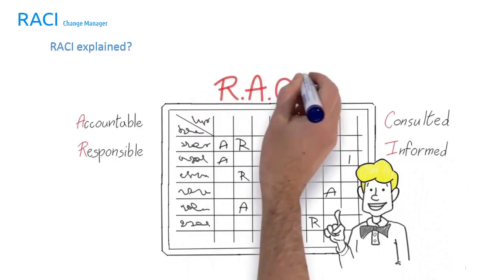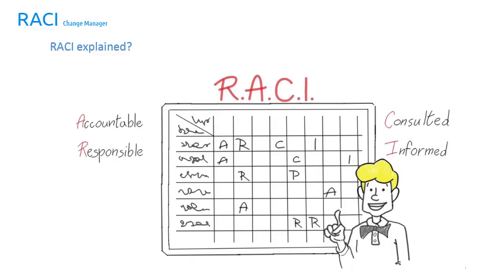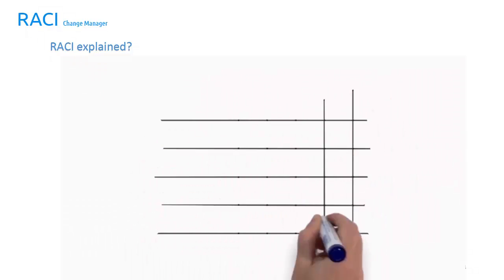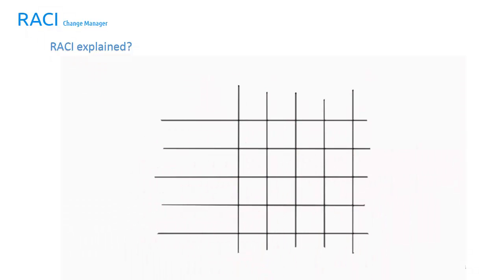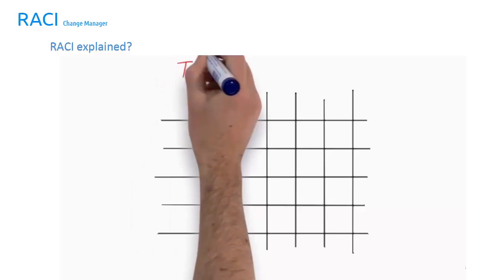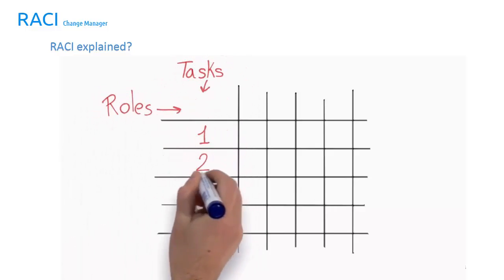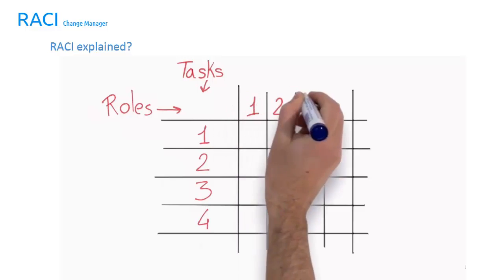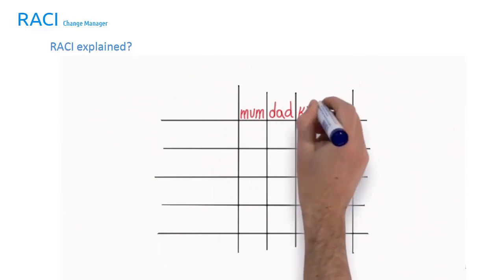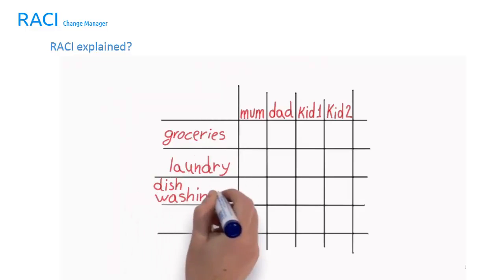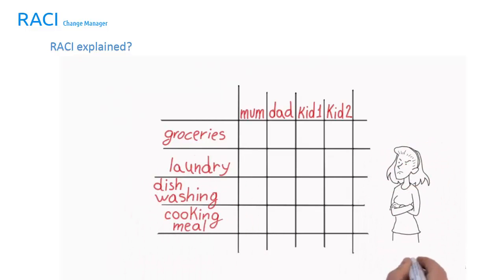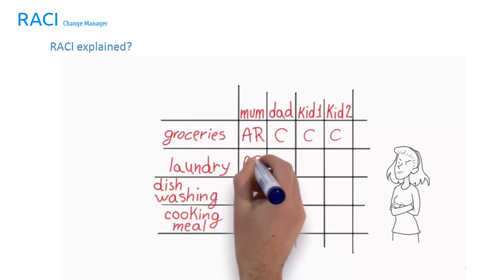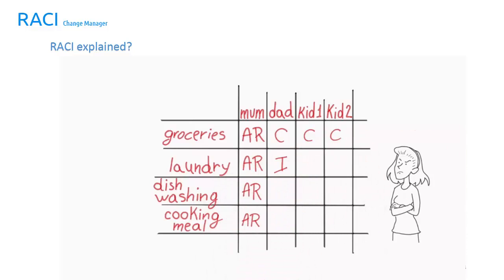RACI is an acronym which stands for Responsible, Accountable, Consulted, and Informed. The idea behind RACI is to create a RACI matrix or chart, where you map your tasks or activities against the roles. The activities go down the left side of the chart and the roles are across the top. We will fill it in relative to the current situation and then change it to the ideal situation. Then you fill in your various A's and R's in all the cells so you know exactly who is accountable, who's responsible, who will be consulted, and who needs to be informed for the various activities.